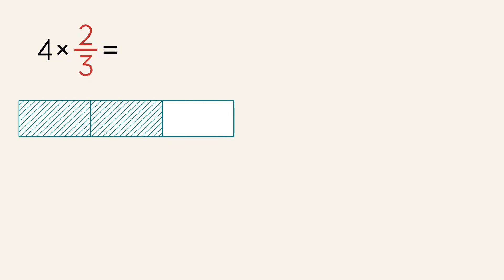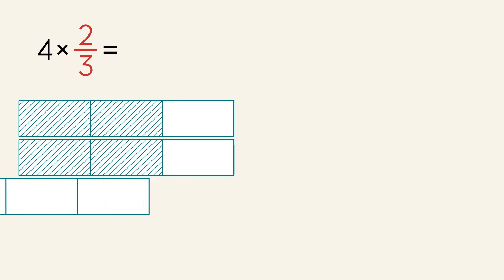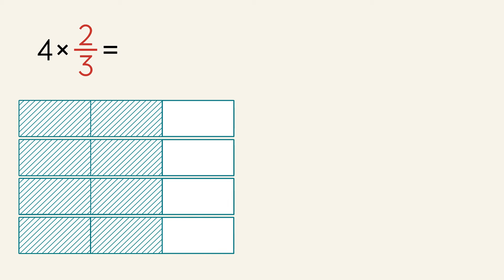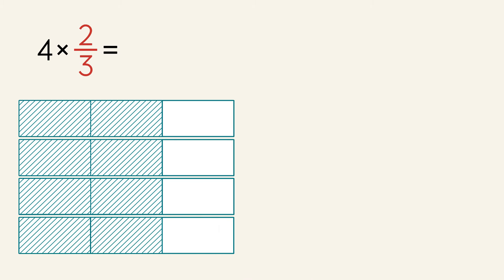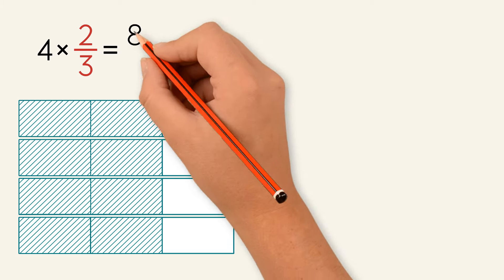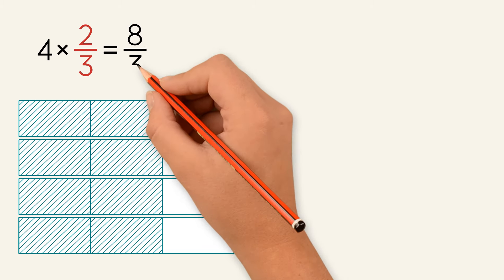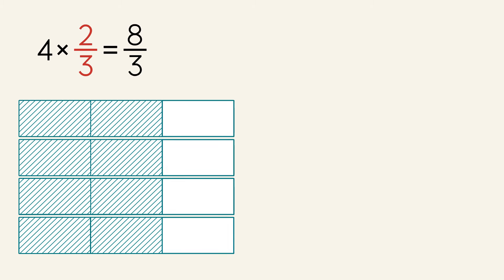We have one group of two-thirds, two groups of two-thirds, three groups of two-thirds, and four groups of two-thirds. We have eight-thirds filled in, so eight is the numerator. The denominator stays the same, so we have eight over three.